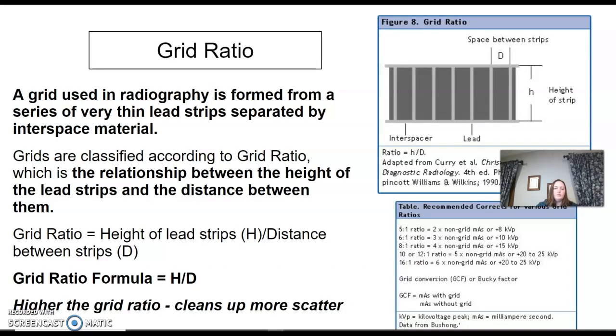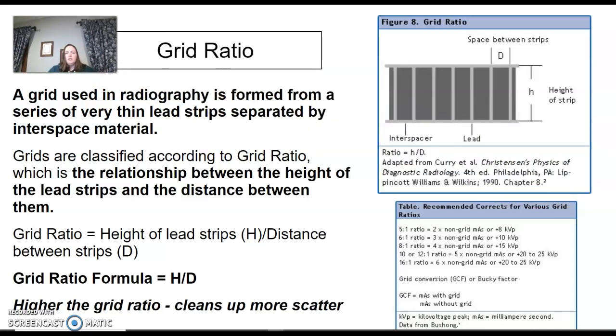Grid ratio: because the grid is formed by a series of thin lead strips, there is an interspace material, which we want, because that is where your primary is going to be absorbed through or go through and not be absorbed. The lead's going to block it—lead blocks. If you ever get a test question that asks you possible materials for interspace material, it can't be lead. If the middle here was lead and the lines are lead, nothing's getting through. The grid ratio formula is the height of the lead strips over the distance between them. The higher the grid ratio, the better it improves your image, the more efficient it cleans up that scatter.